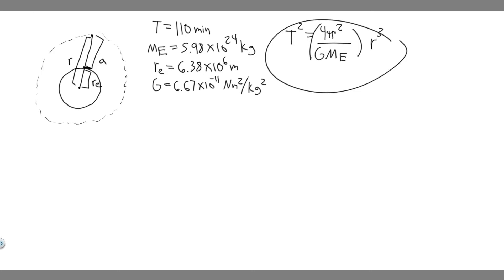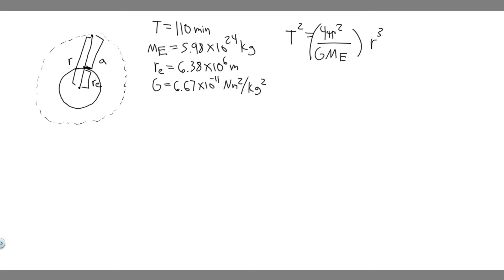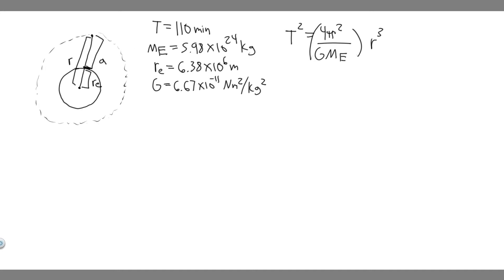This is the equation we're going to use to solve. We're trying to find altitude, but we can't find altitude directly. So what we need to do is find the radius — the distance from the center to the object rotating outside. Then notice that r minus Re equals the altitude, because if we have one long distance and subtract part of it, we get the altitude. So we're solving for r, which is this whole thing, and then we'll subtract the radius of the Earth.